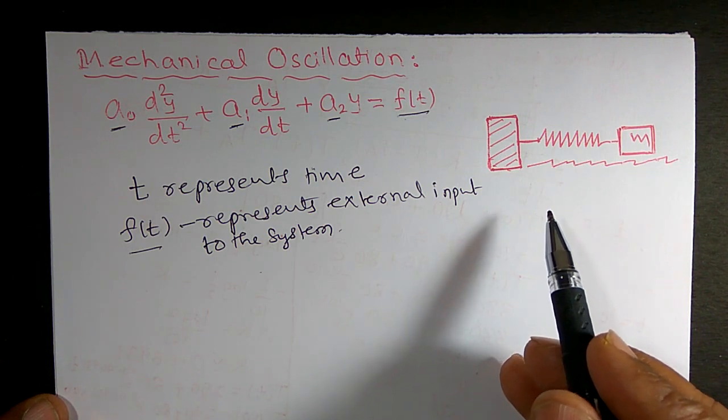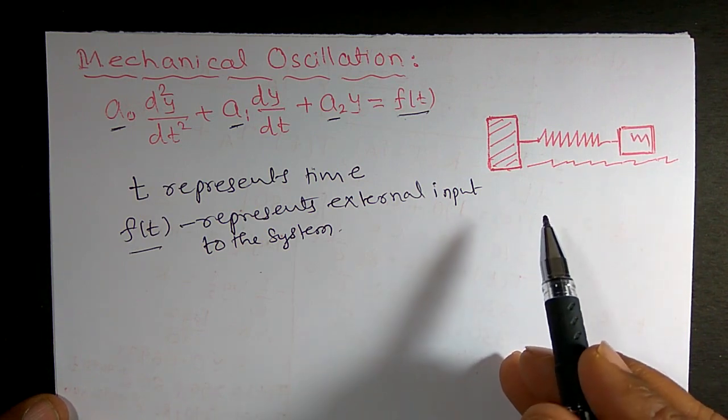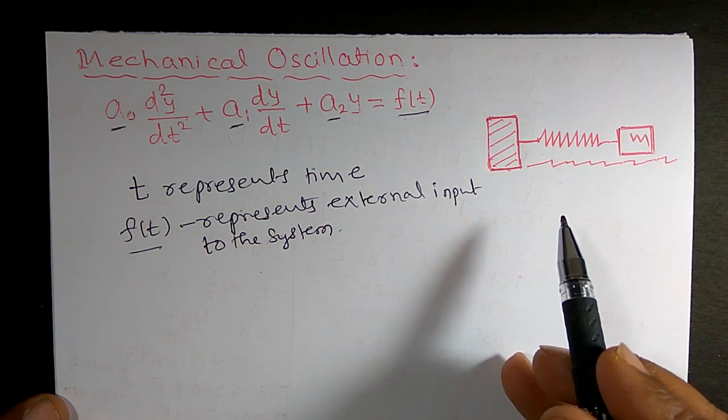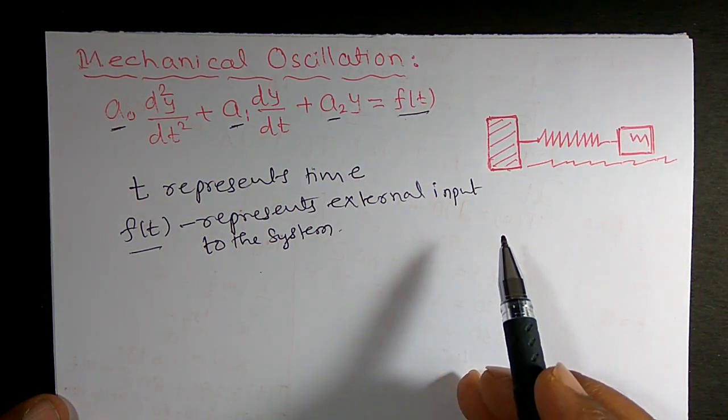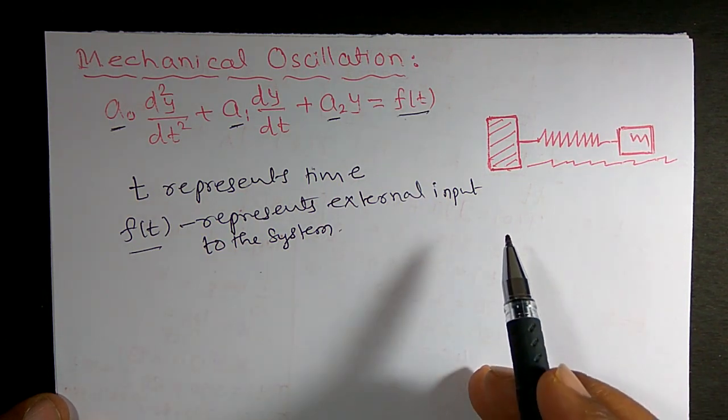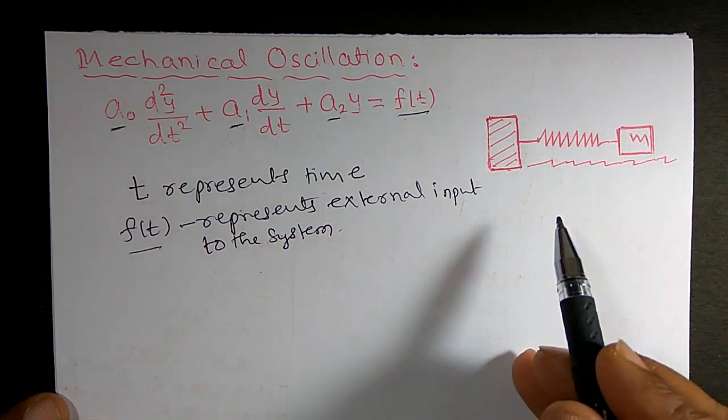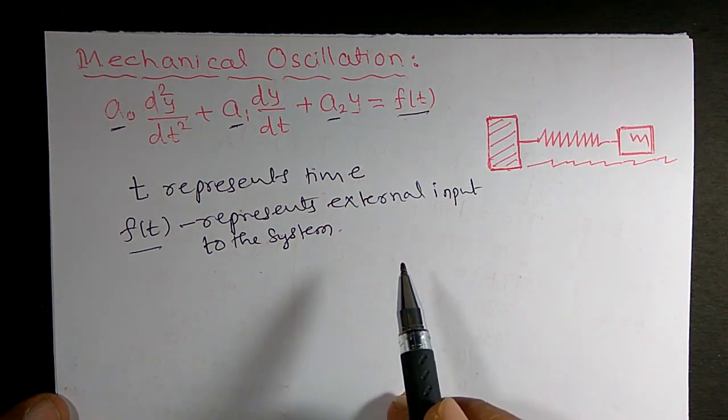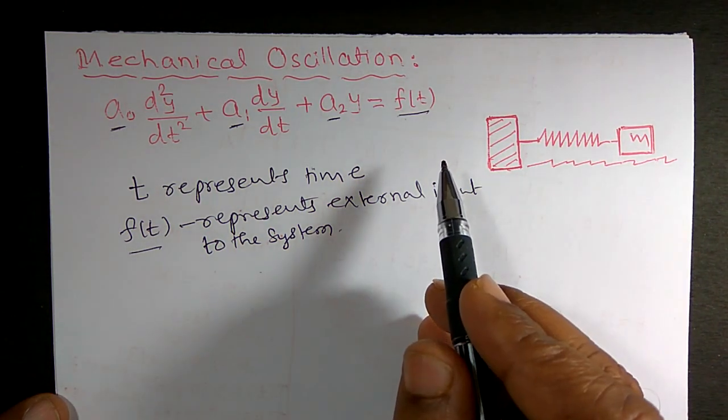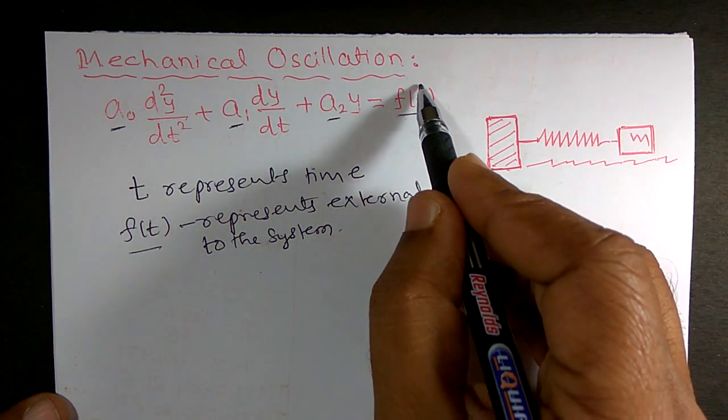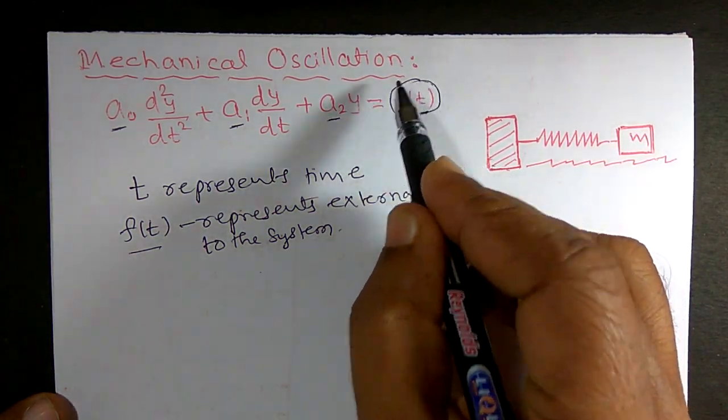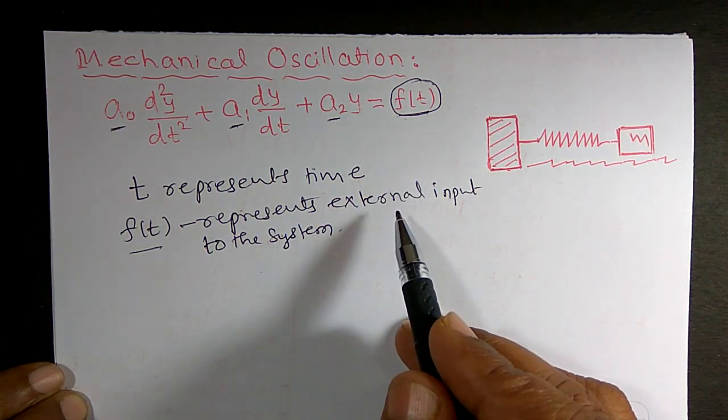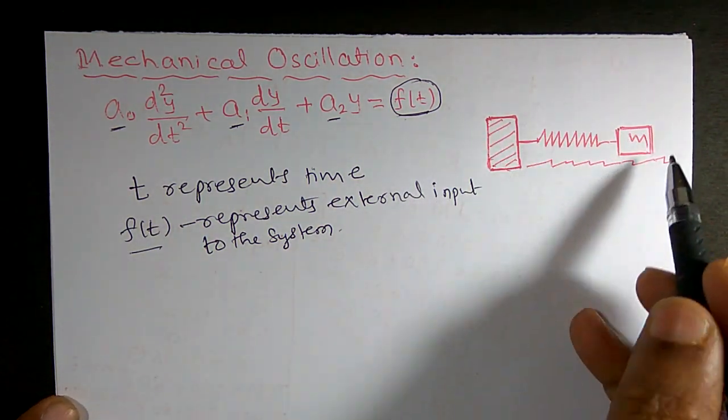Friction dissipates energy. So the motion will decay to zero as time increases unless it is sustained by some external input of energy in the form of a forcing function represented by a non-homogeneous term f(t). So it means that the entire equation represents this system.